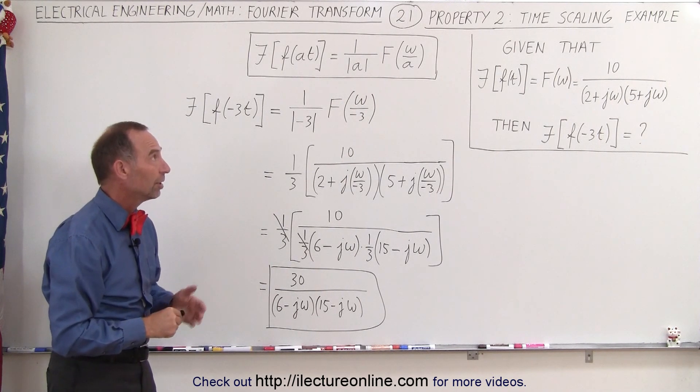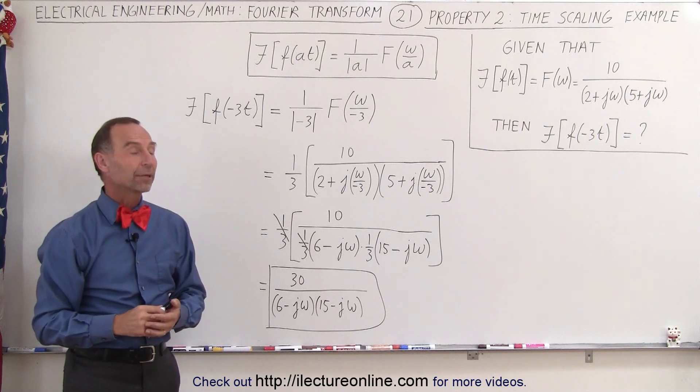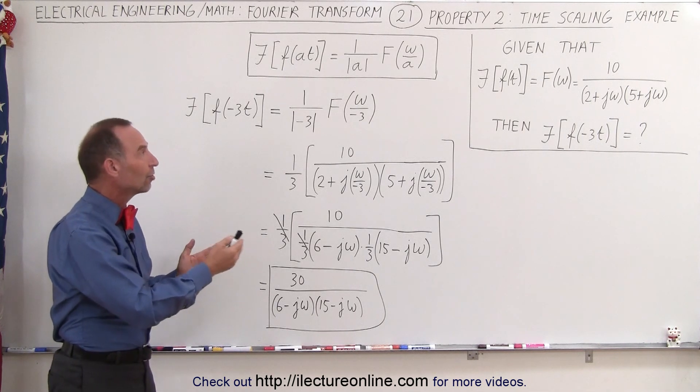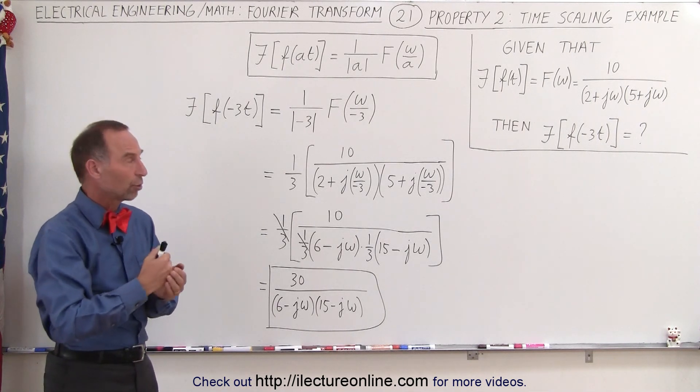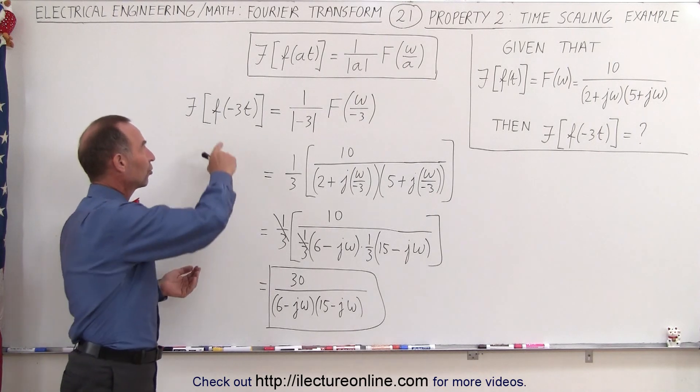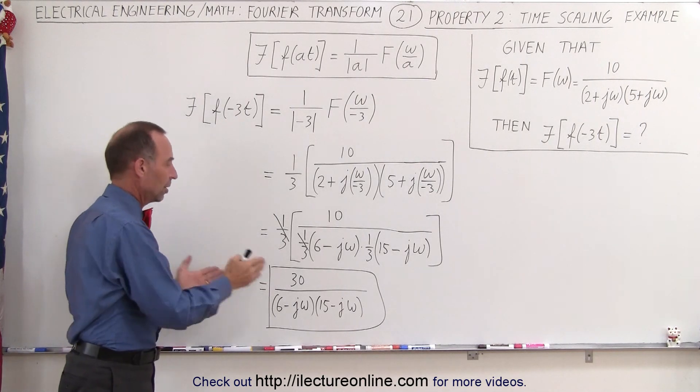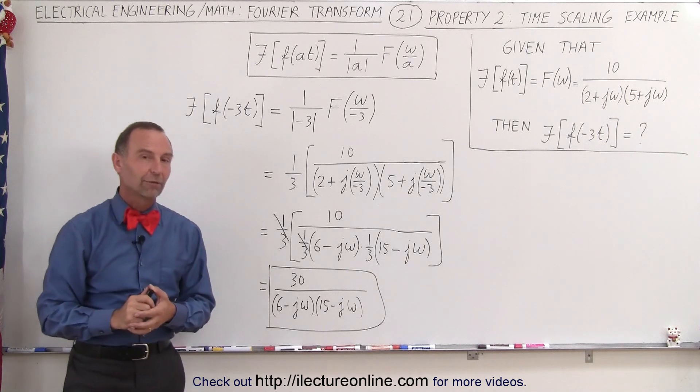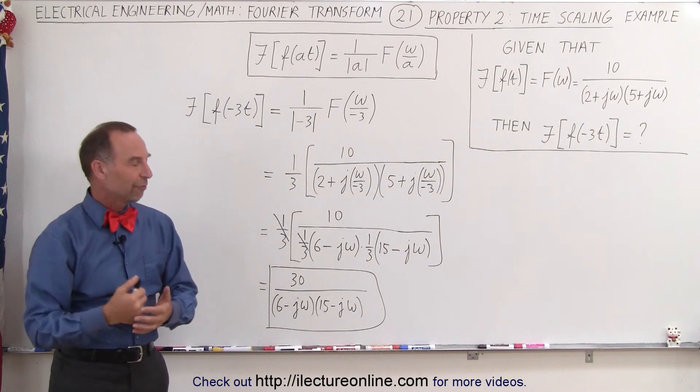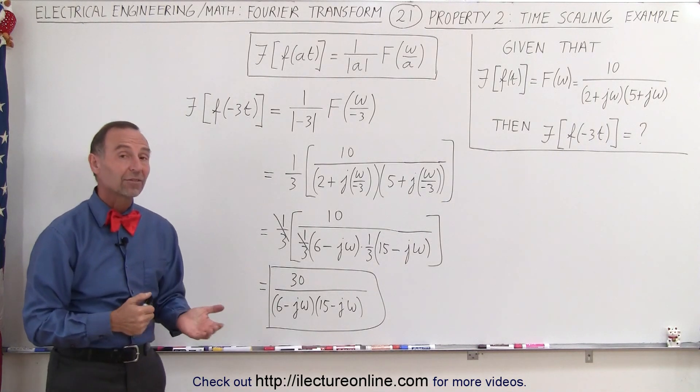So that makes it a lot easier. Again a very handy property that can come in handy once you have one result of a Fourier transform, then as you scale the time to a different number here you can see how that affects the Fourier transform in the frequency domain output and that's how it's done.